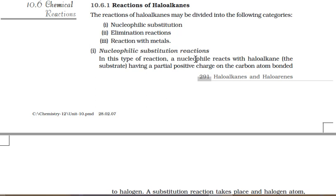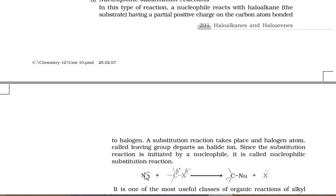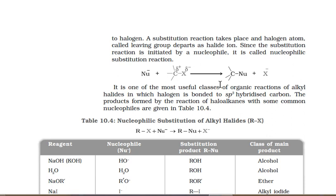Now we first discuss the nucleophilic substitution reactions of haloalkanes. A nucleophile is represented as Nu⁻ — a substance which contains either a negative charge or a lone pair. That means nucleophiles are electron-rich species. The literal meaning is 'nucleus loving.' Since the nucleus is positively charged, the nucleophile is negatively charged or electron-rich — an anion or a species with a lone pair.